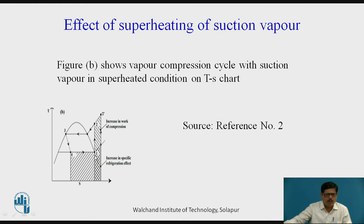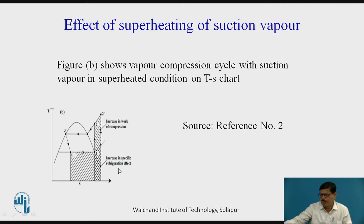Whenever we consider that the initial vapor is superheated, then point 1 will be shifting towards the higher side. The temperature of the vapor entering the compressor will be superheated — greater than T1, maybe T1 dash. So 1 dash, 2 dash will be the compression with suction vapor superheated. The hatched area shown on the right-hand side represents the refrigerating effect for the superheated case.